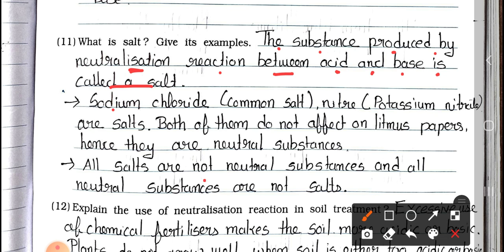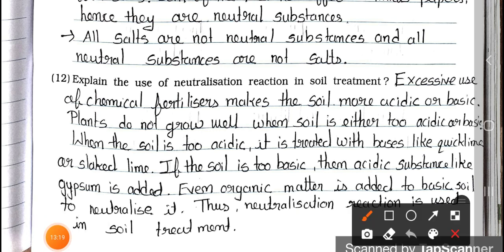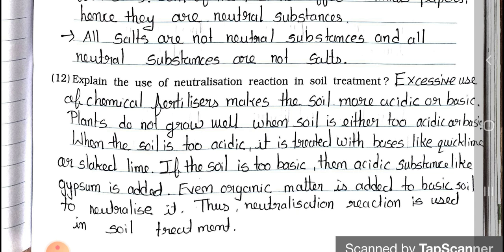All the salts are not neutral substances and all neutral substances are not salts. Question number 12: Explain the use of neutralization reaction in soil treatment. Answer: Excessive use of chemical fertilizers makes the soil more acidic or basic. Plants do not grow well when soil is either too acidic or basic. When the soil is too acidic, it is treated with a base like quick lime or slaked lime. If the soil is too basic, then acidic substance like gypsum is added. Even organic matter is added to basic soil to neutralize it. Thus, neutralization reaction is used in soil treatment.